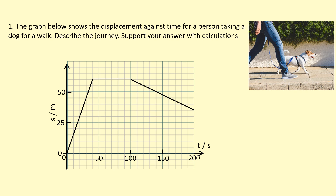Let's start at t equals 0 where the displacement is 0, and you can see that the displacement is increasing at a steady rate. In the first 10 seconds it's covering around 15 meters, and in the second 10 seconds it's covering around another 15 meters, so we can see it's a constant velocity in the forward direction.